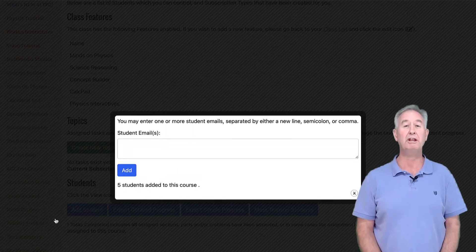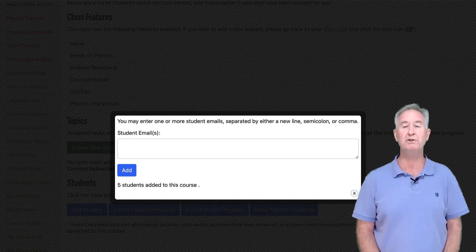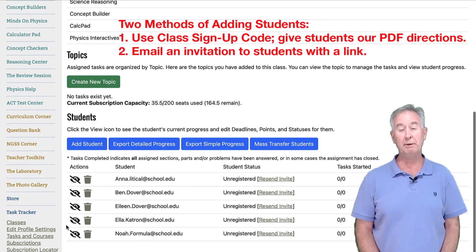Our system will email invitations to all your students to register for the class. That email contains a link with what's called a token that they can click on that remembers the class signup code for your particular class. They fill out the form and they're added to your class.